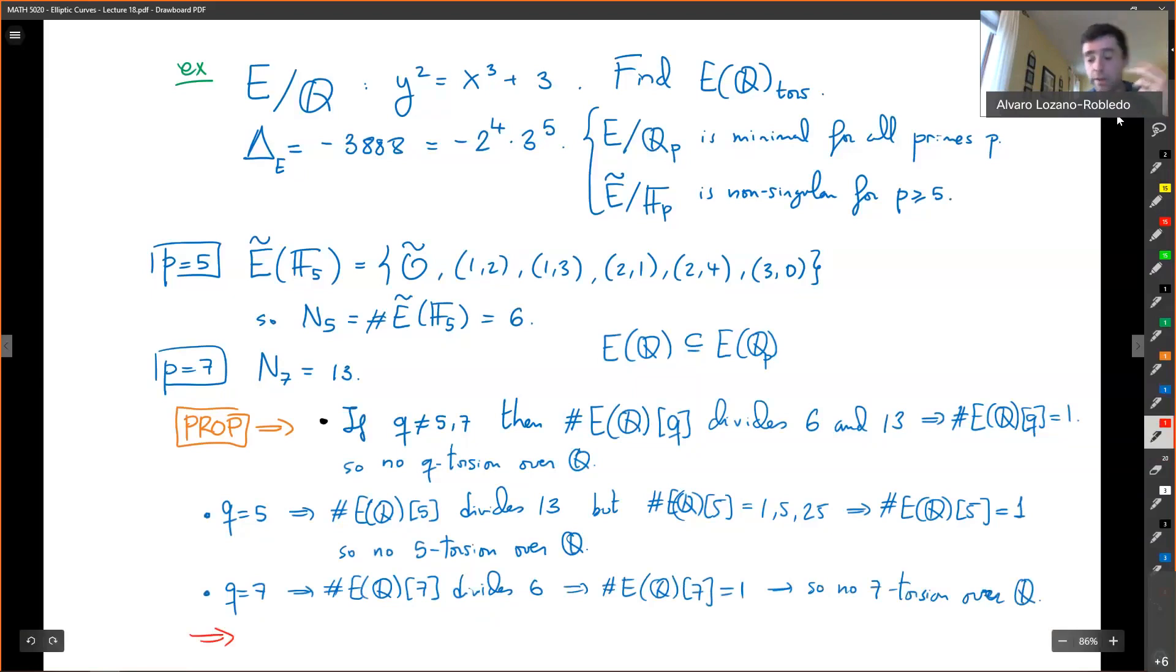there is no, if there is torsion, there's gotta be some P prime torsion, but there is no prime torsion at all. So this tells me that the entire torsion subgroup is just trivial.